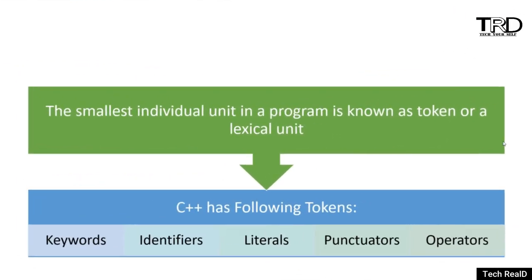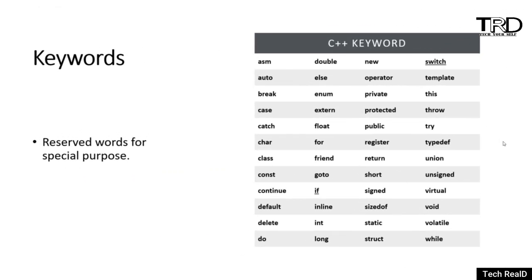Coming to a token — what is a token? The smallest individual unit in the program is known as a token, also called a lexical unit. For example, if we declare an integer — int a = 5 — the smallest individual unit, that is 'int', is a token. Similarly 'a' is a token. There are following types of tokens: keywords, identifiers, literals, punctuators, and operators.